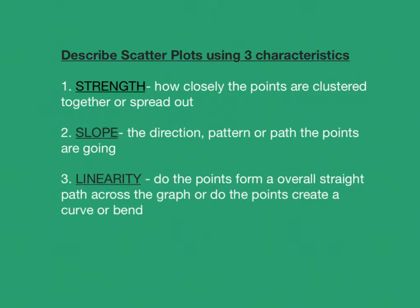First of all, we need to know how we're going to describe them. We're going to be using three different characteristics. The first one is the strength of the relationship between the two variables, and that basically is how closely are the points or the dots on the graph clustered together. Is it like a magnet and they're being pulled closely together, or are they spread out far apart from each other?